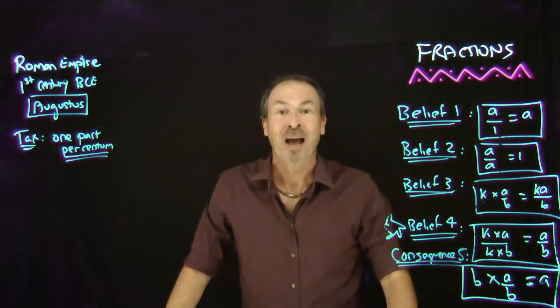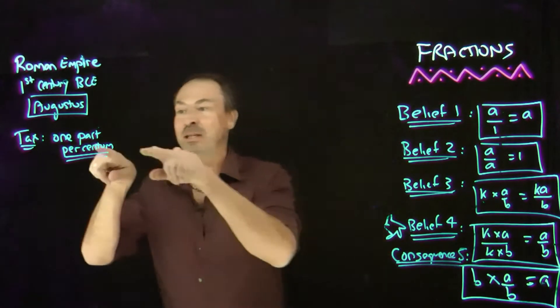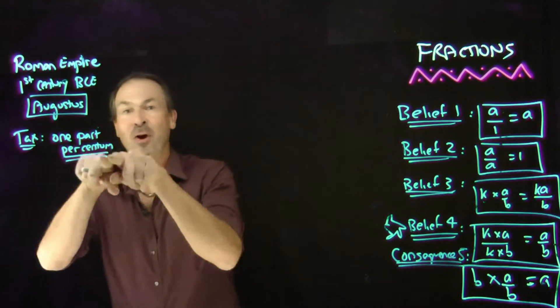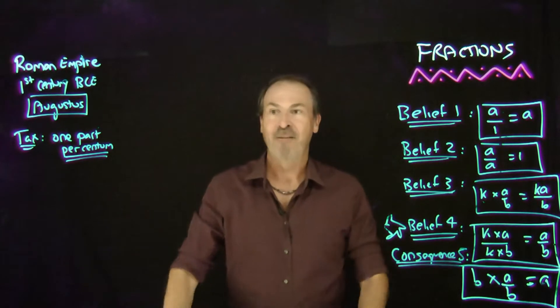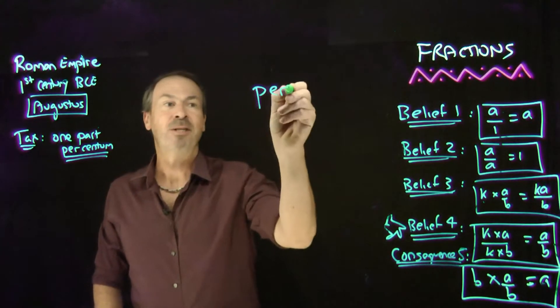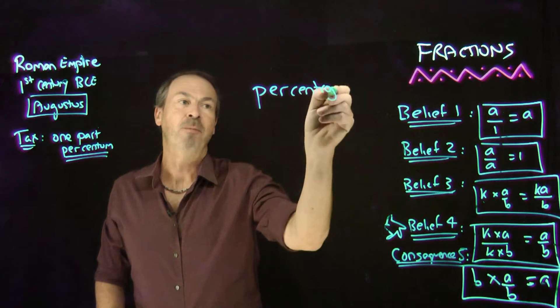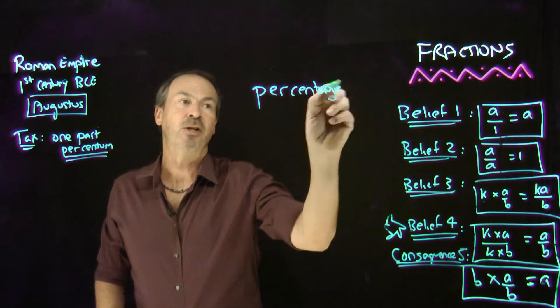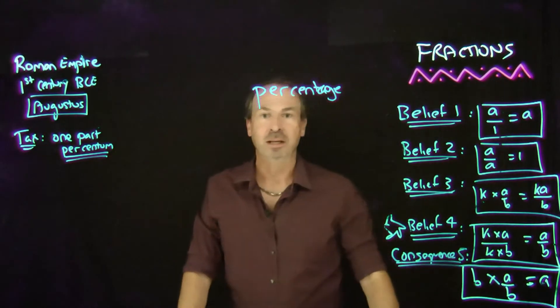Taxes never went away. We still have taxes to this day, and we still think in terms of per centum — per 100. In fact, the word we use now is percentage rather than per centum. Percentage — that means per 100.